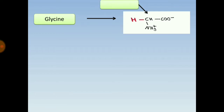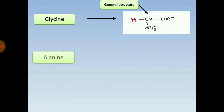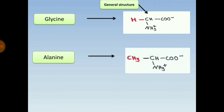Looking at the structures: glycine has the general structure with NH3⁺ and COO⁻ on the alpha carbon with hydrogen as the side chain. Alanine has one extra carbon (CH3) attached to the general structure instead of hydrogen. Valine has a more extended aliphatic side chain.